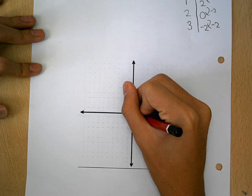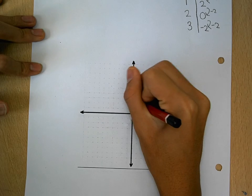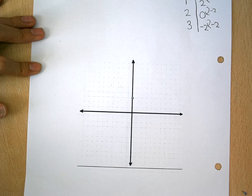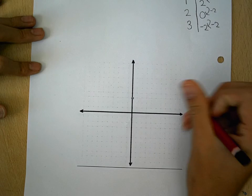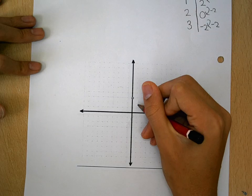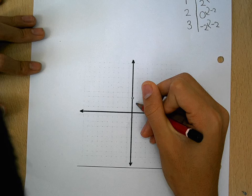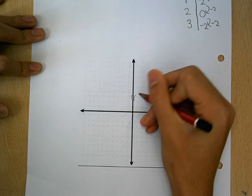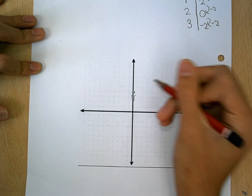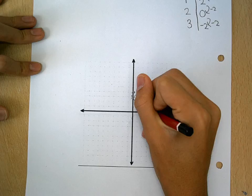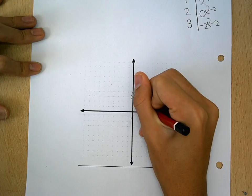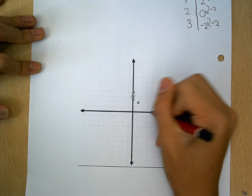When x is 0, y is 4. Wait, wait, 4 is here. And then 1, 2 goes here. And 2, 0 goes here.